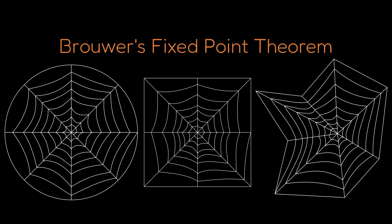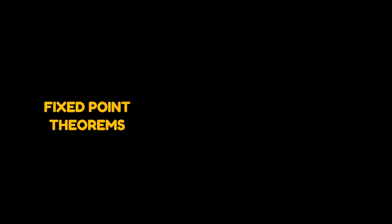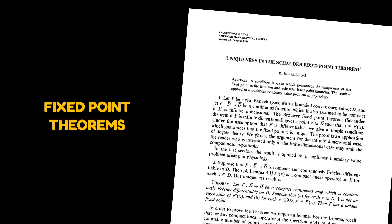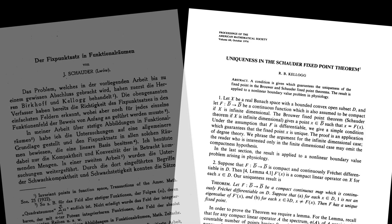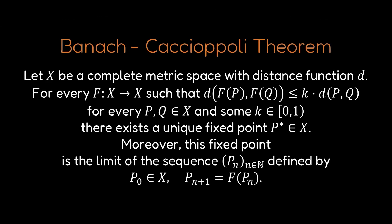Brouwer's Theorem is just one among many fixed point theorems. For example, we have Kellogg's Theorem, which under certain additional conditions guarantees the uniqueness of the fixed point, Schauder's Theorem, which applies to more general, even infinite dimensional spaces, and the Banach-Caccioppoli Theorem, which by adding a bit of structure provides a simple algorithm to find the fixed point's position.